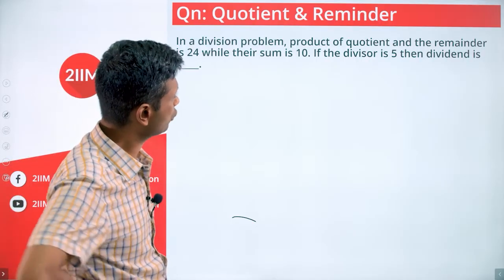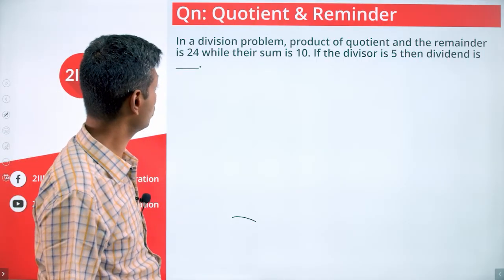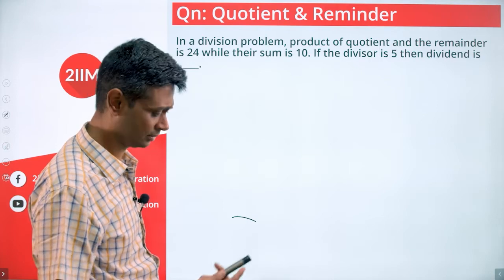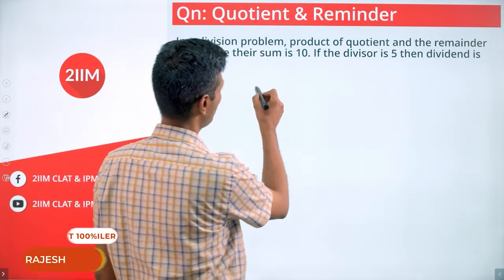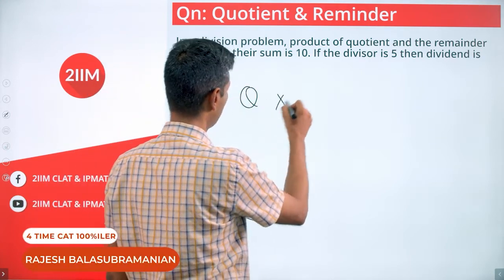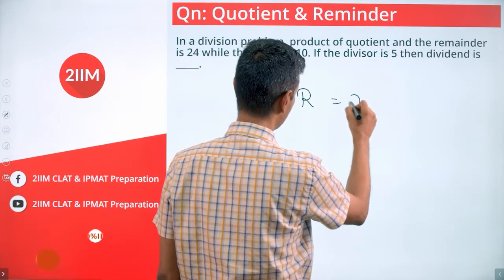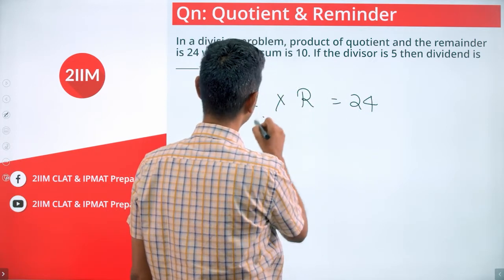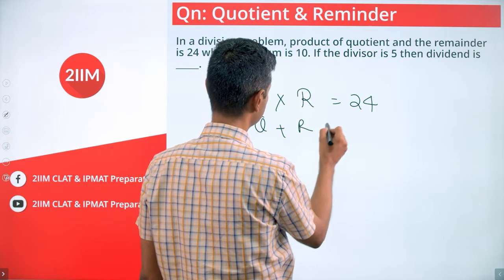In a division problem, the product of quotient and remainder is 24 while their sum is 10. Quotient into remainder is 24, quotient plus remainder is 10.